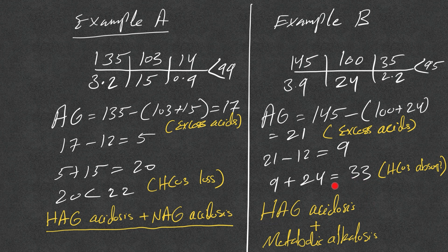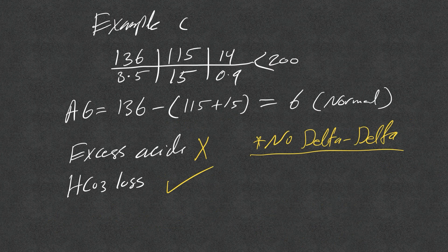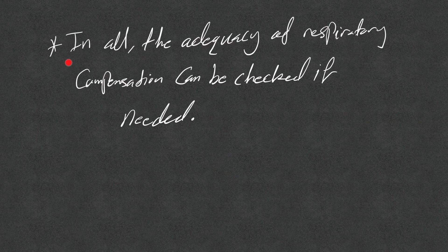Example C: anion gap = 136 minus (15 + 115) = 6 — normal. Since there is no elevated anion gap, there is no need to calculate delta-delta. No excess acid; this is from bicarb loss only.